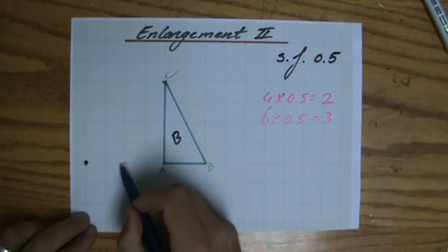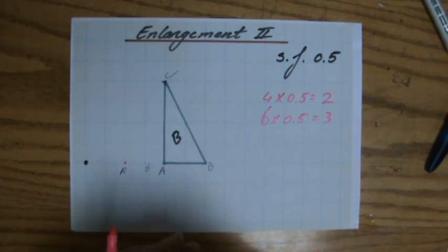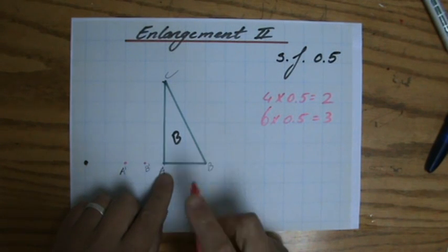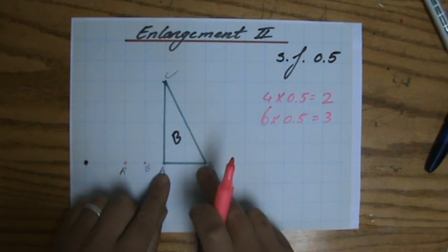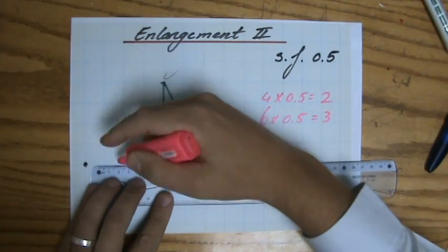There we go. 1, 2, 3. B apostrophe over there. And as you can see, the length AB, which used to be 2 blocks long, now is 1 block long, half of 2. There we go. I can already connect that.